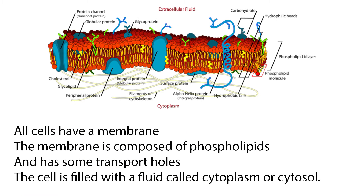The one thing that all cells have in common is a membrane, which is like a semi-permeable plastic bag. The membrane is composed of phospholipids and has some transport holes which are proteins that help certain molecules and ions move in and out of the cell.